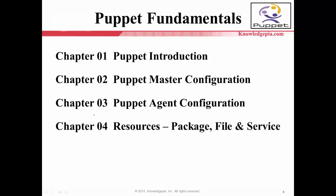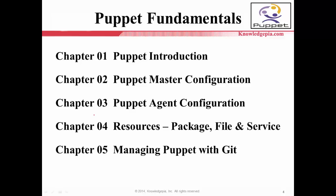Chapter 4 will focus on resources such as packages, files, and services. Even though there are many resources Puppet can control, especially these three — package, file, and services — are the most important resources for Puppet management. Chapter 5 will focus on Managing Puppet with Git. If you complete this chapter, you will know how to control and manage versions based on Puppet.